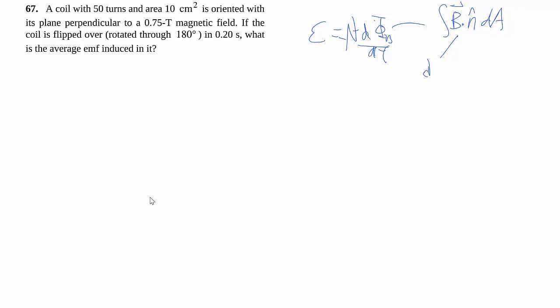So you could possibly have your B changes over time, you can possibly have your area changes over time, but also you can have, because of this dot product, that the orientation changes over time. And this question deals with this last case.